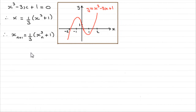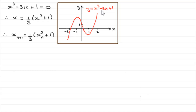In this tutorial, I want to show you why iteration works and how it calculates an estimate for a particular root. I'll take you back to the equation we used in an earlier tutorial: x cubed minus 3x plus 1 equals 0. We saw that if we were to plot the graph y equals x cubed minus 3x plus 1, those solutions to the equation would be found at the intersection with the x-axis where y was 0.